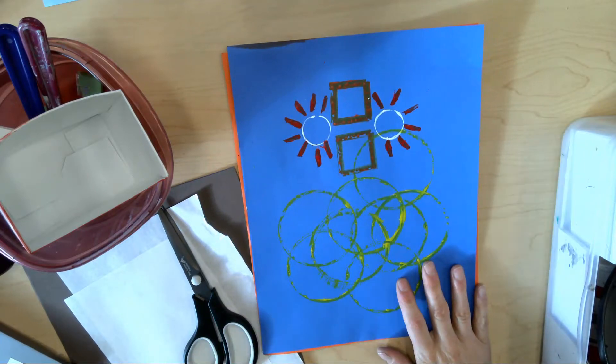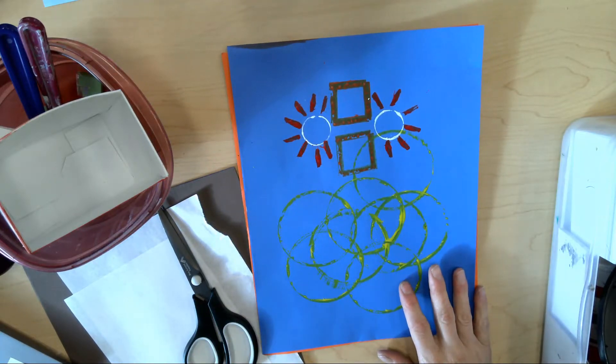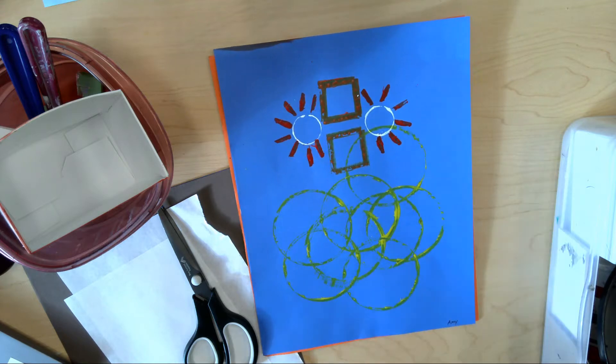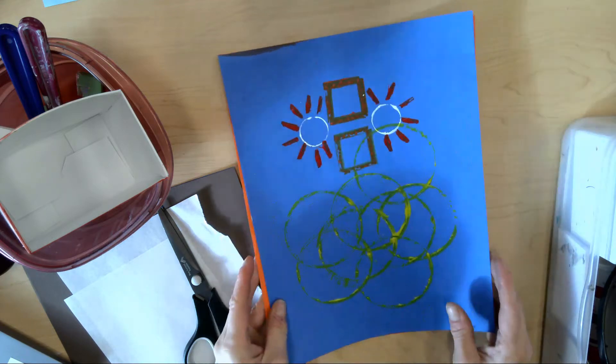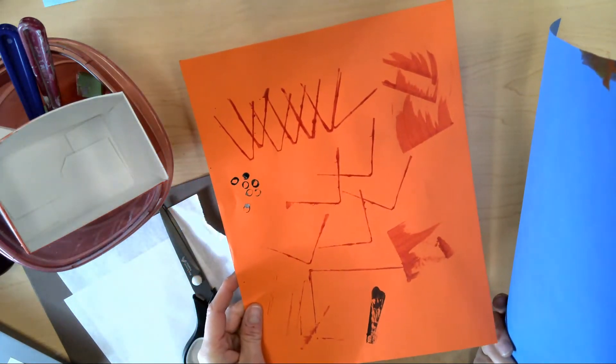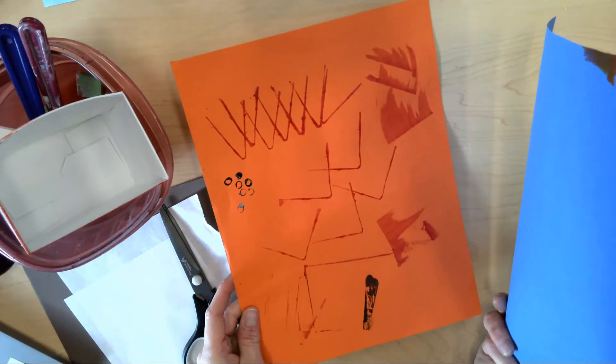Okay, so this video is for the found object printmaking, which is monoprinting with found objects. So here are some examples of some things that were started, haven't been finished yet, but a good idea of using found objects, dipping them in paint, and then applying them to a surface.